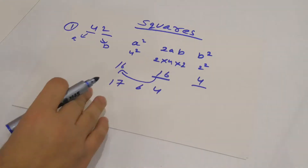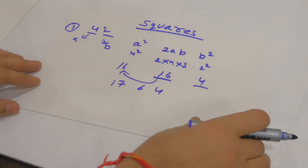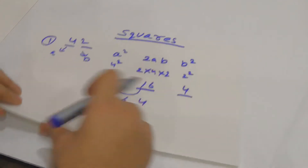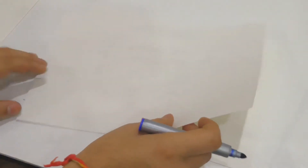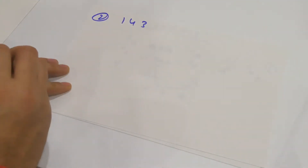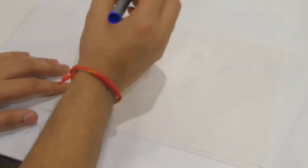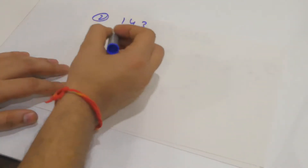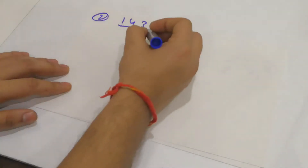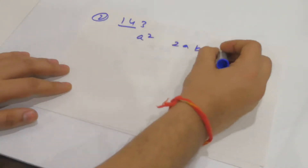Now let's take a bigger number — a 3-digit number. Suppose you have to find the square of 143. Since 143 is a 3-digit number, what I'll do is first find the square of 14 using the same method: A² + 2AB + B².